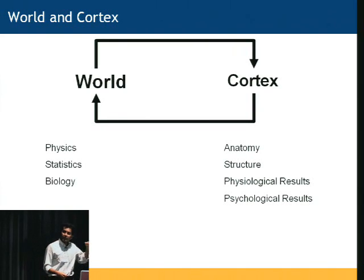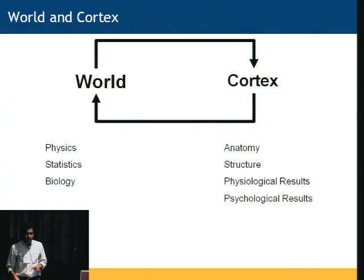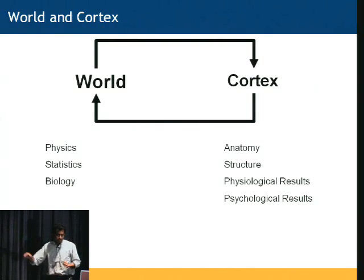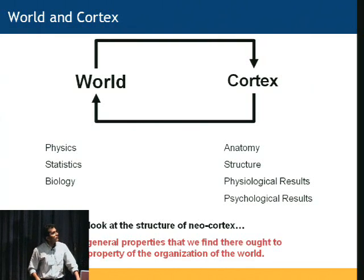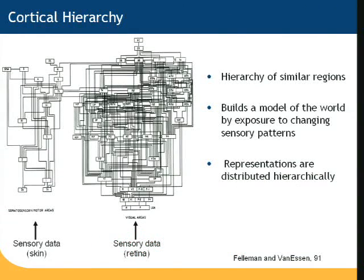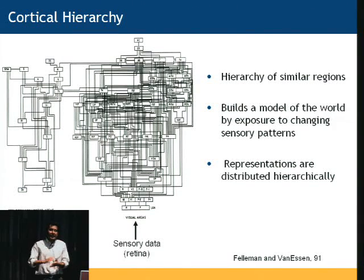If you find some structure of the cortex and can find a mapping between that structure and a property of the world, then you have found a computational principle you can use to build computers that work like the brain. I'm going to give you just one example of the flavor of such reasoning. Many neuroscientists are familiar with this diagram — the diagram of the anatomical connection in the cortex. This is the famous Felleman and Van Essen diagram.